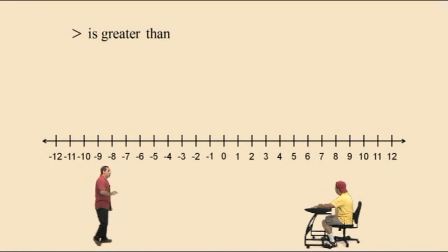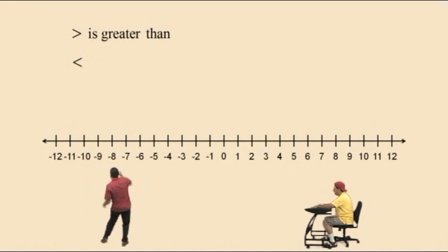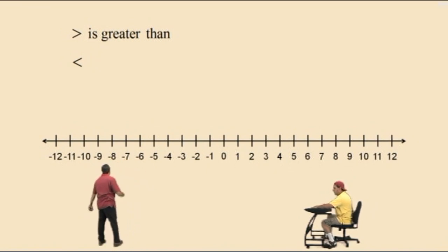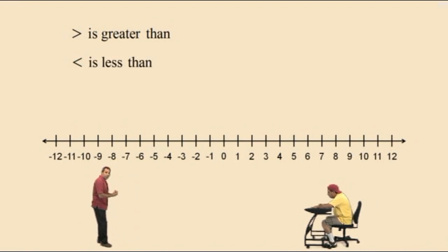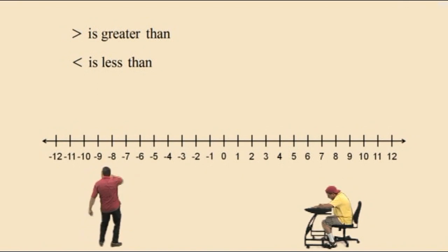You'll see what I mean when we start doing our problems. Now here comes another one, Charlie. This looks like an arrowhead pointing to the left. And that symbol actually represents is less than. So if something is less than something else, it means it's to the left of it on the number line.